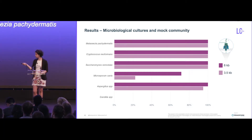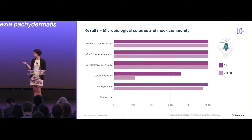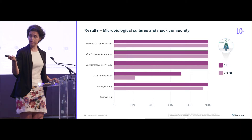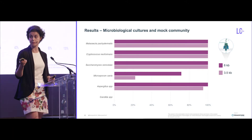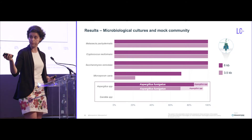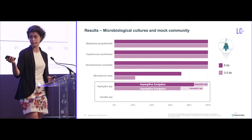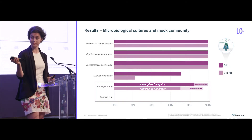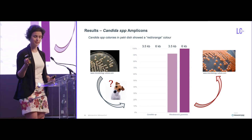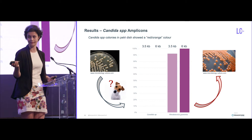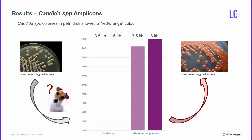For Microsporum canis we detected it better with 6 kb instead of 3.5 kb. Then we have Aspergillus and Candida, which were not identified at the species level at the beginning, but thanks to MinION we found it was Aspergillus fumigatus. Candida showed a problem — the colonies were orange-red, and we found it was not Candida in our cultures but rather Rhodotorula graminis, which is the causal agent of this color.